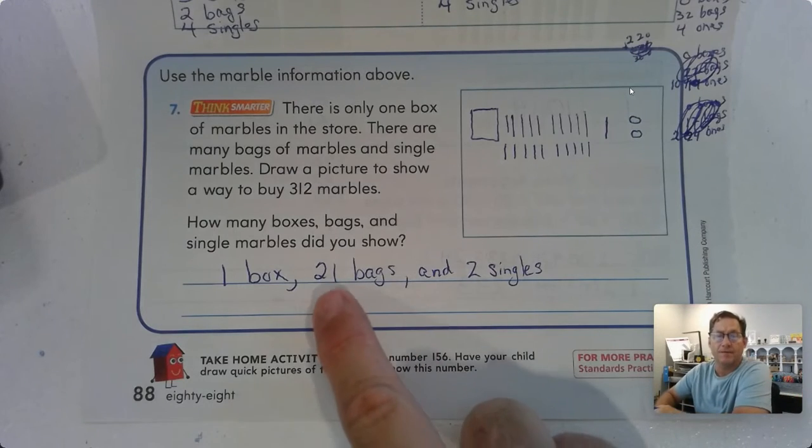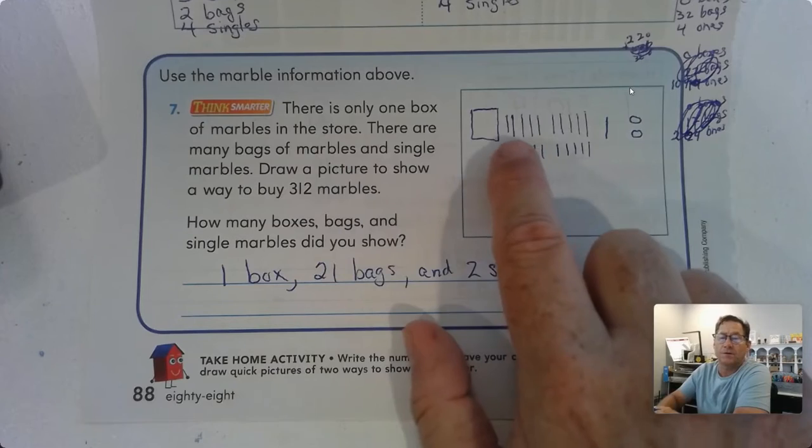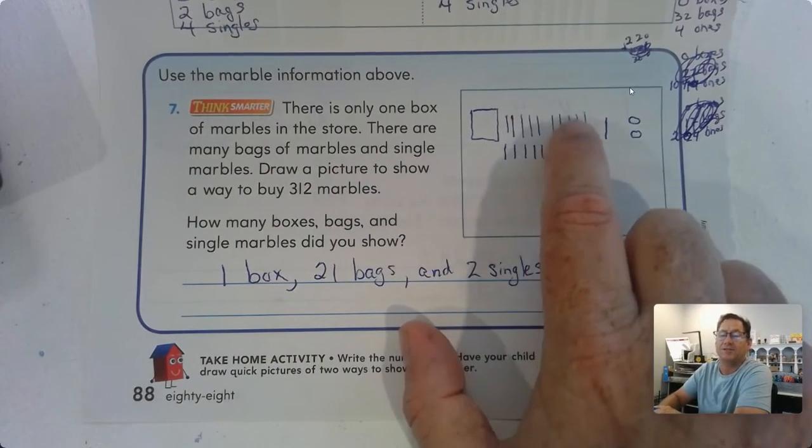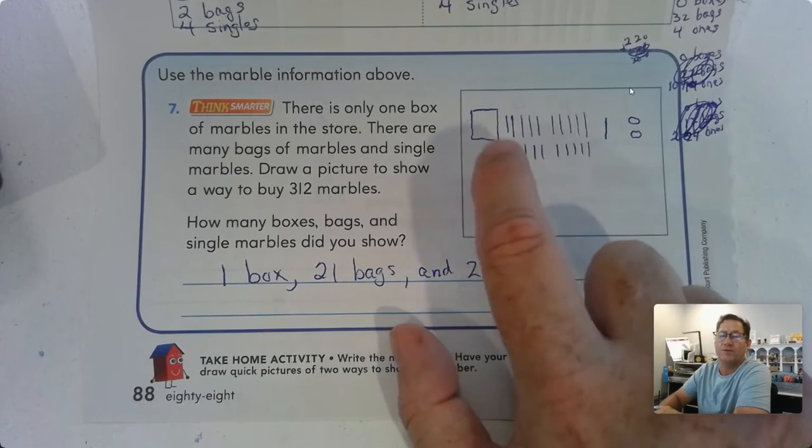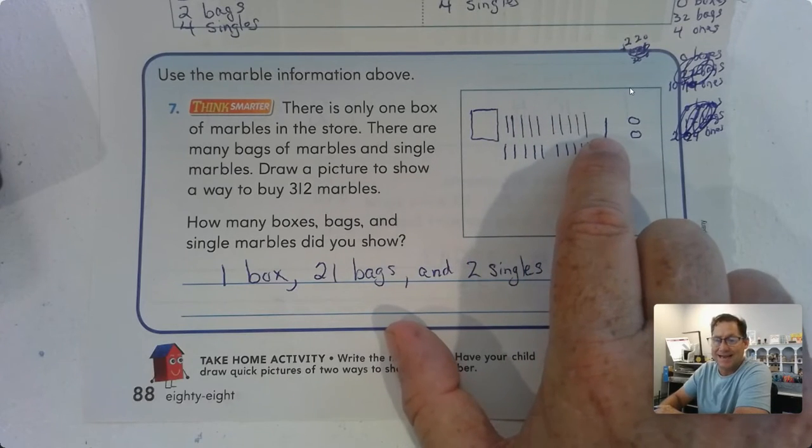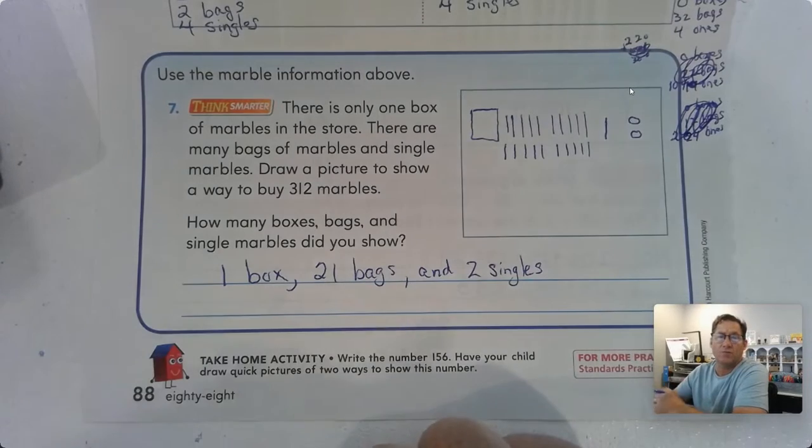21 bags is - we have five, ten, 15, 20 bags. That's 200. Every set of ten tens is a hundred. So we have 100, 200, 300, 310, 311, 312. So that's one way we can do it.